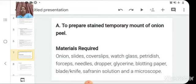Now this will be your heading, to prepare stain temporary mount. After aim you will write 4 points of theory. Then you will write materials required. Material required would be your onion, slides, cover slips, watch glasses, petri dish, forceps, needles, dropper, glycerin, blotting paper, blade, knife, safranin solution which is a stain, and a microscope.